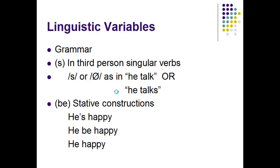Linguistic variables can also be grammatical, such as including the -s in third person singular verbs, such as 'he talk' or 'he talks.' Or we could also talk about stative constructions — you can include the 'be' or not include the 'be,' such as 'he's happy,' 'he be happy,' or 'he happy.' All of these can be found in spoken English.